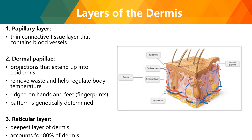The layers of the dermis include first the papillary layer — a thin connective tissue layer containing blood vessels. Next, you have dermal papillae, which are projections that extend up into the dermis; they remove waste and help regulate body temperature, and are rich on hands and feet for fingerprints, with the pattern genetically determined. Lastly, the reticular layer is the deepest layer of the dermis and accounts for 80% of the dermis.